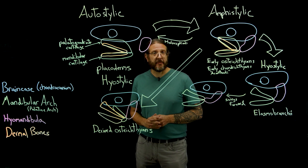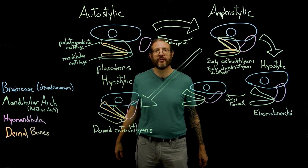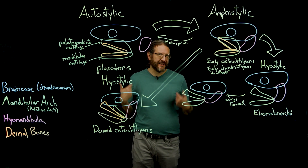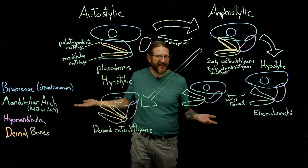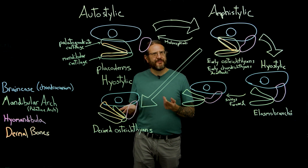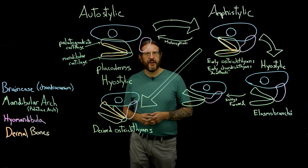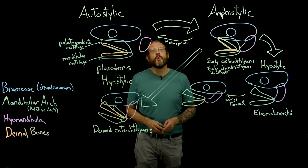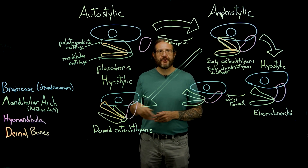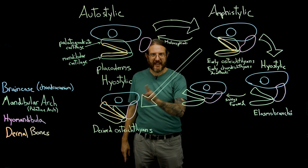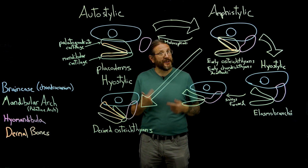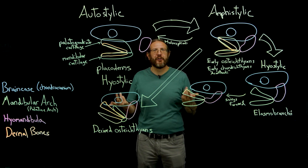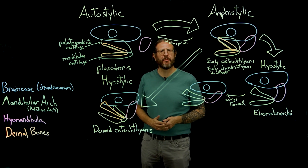We'll further explore how hyostylic enhances the structural and functional diversity of fishes in an upcoming lecture. At this point, those of you interested in human evolution may be wondering how we ended up with our own jaw morphology, which doesn't look very much at all like this osteichthyan jaw. But aren't we also members of the bony fish lineage? Yes, we are — which means that our ancestors went through the progression from autostylic to amphistylic to hyostylic that I just outlined. But my upper jaw is quite firmly fused to my neurocranium, and I certainly can't throw my teeth at my prey.